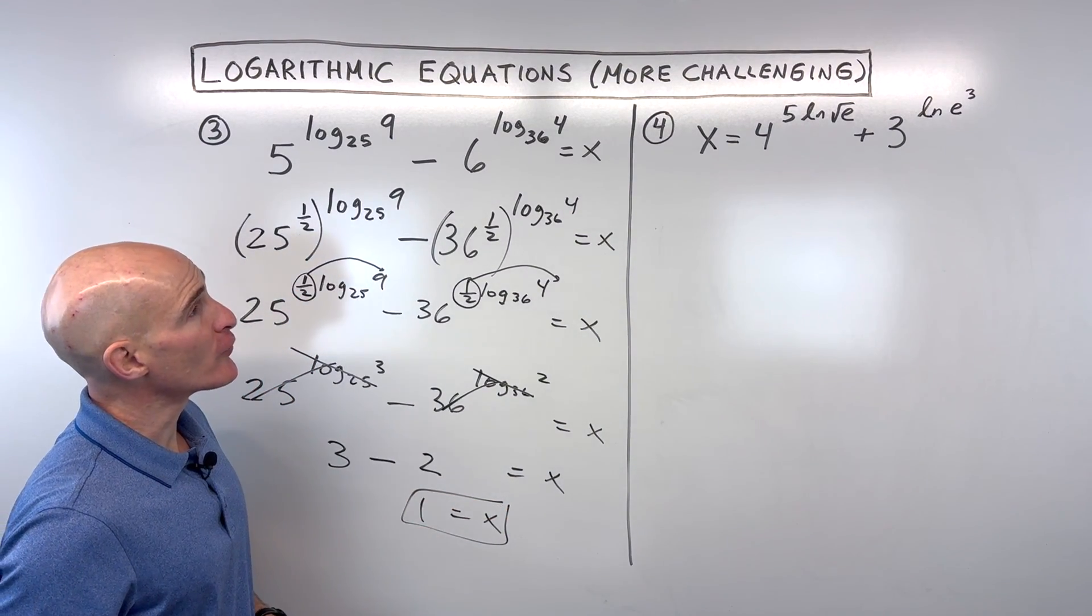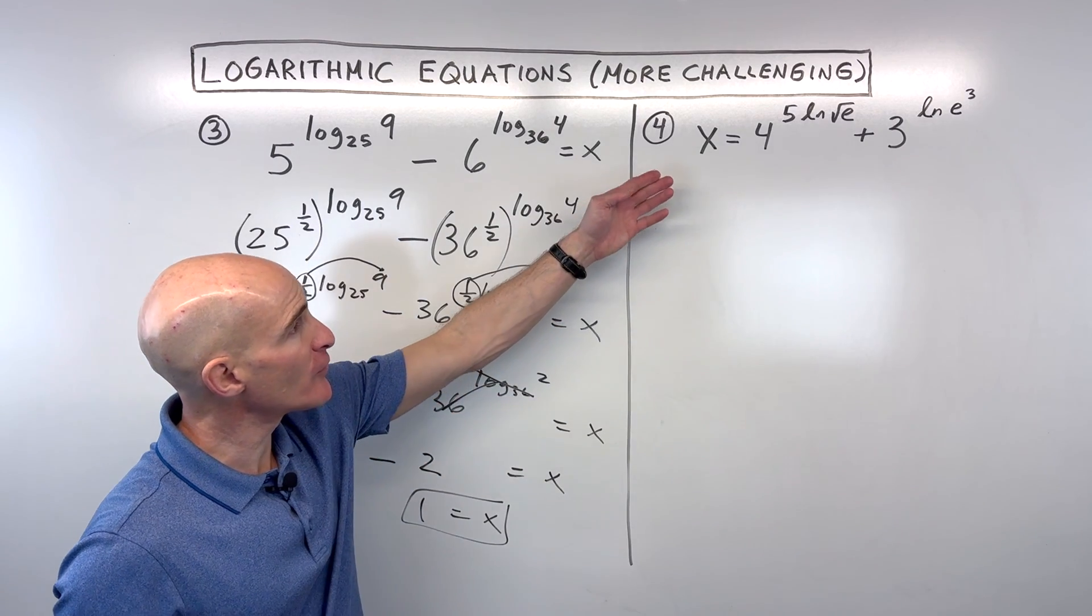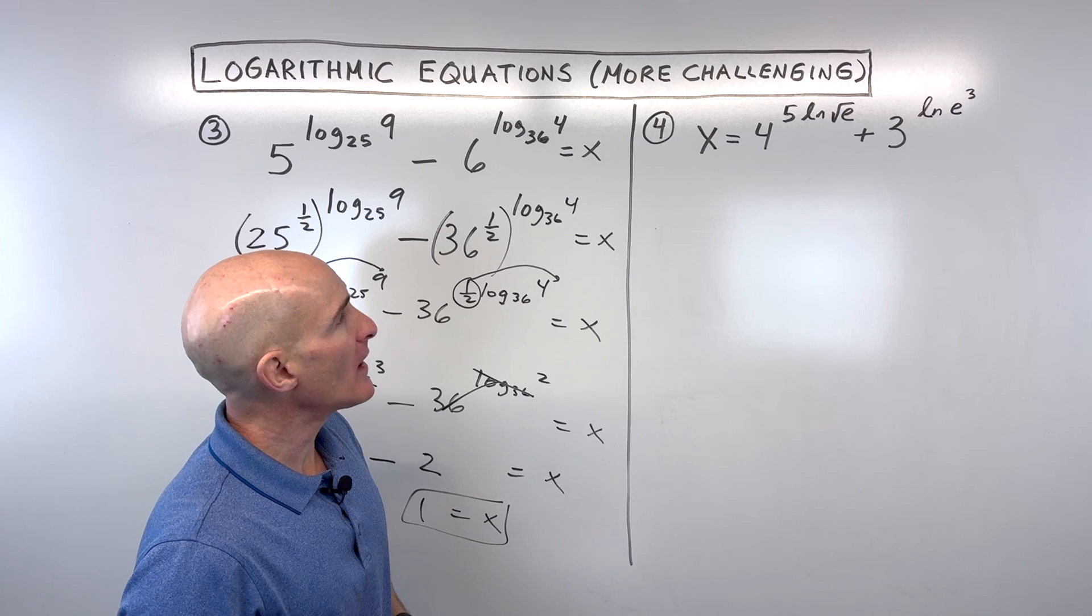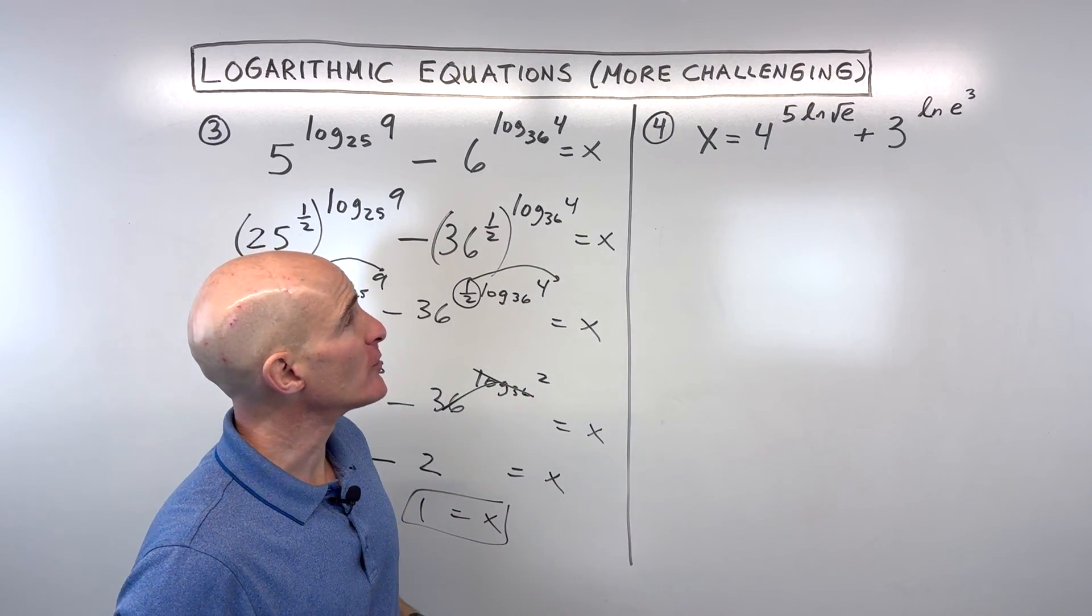Let's take a look at number 4 now. So for number 4, you can see we've got some natural logs here in this problem. How would you do this one? Well, again, we're going to want to try to rewrite this a little bit.